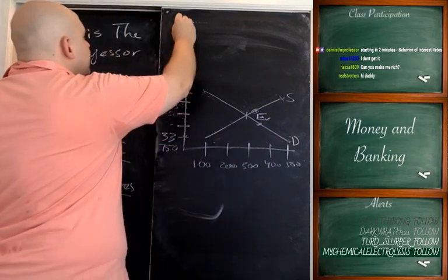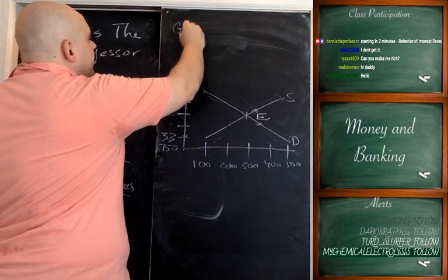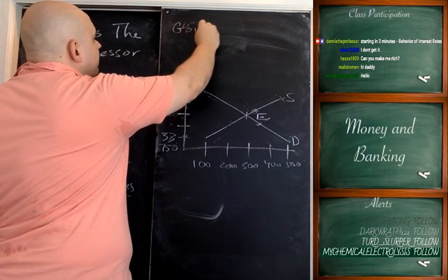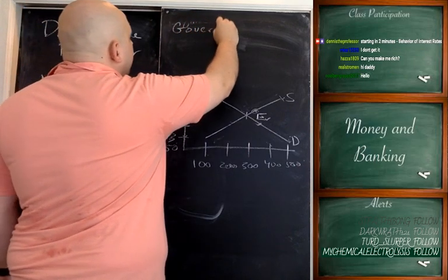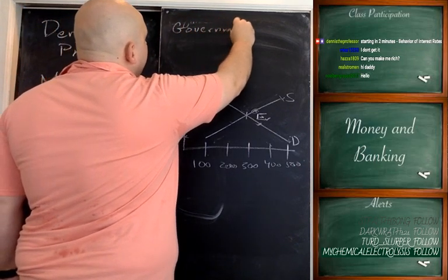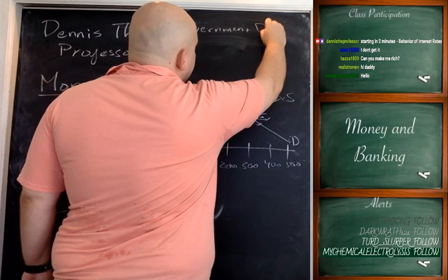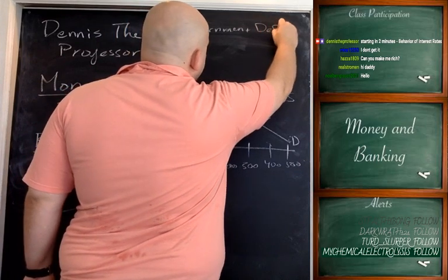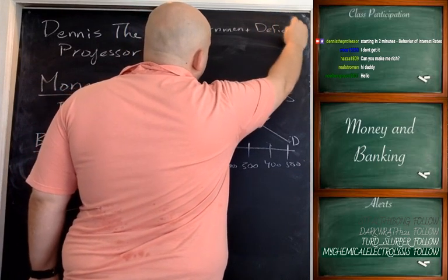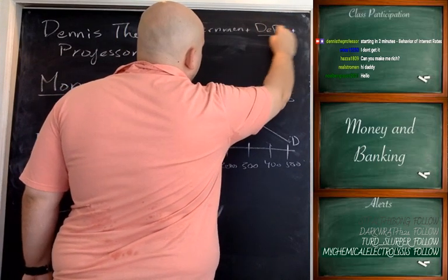The next factor is the government deficit. It's important to remember that it's not only companies borrowing money from financial markets.